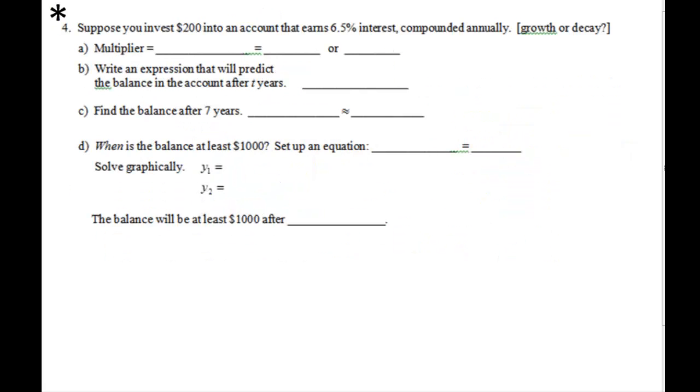Number four. Suppose you invest $200 into an account that earns 6.5% interest compounded annually. Growth or decay? Well, if I'm investing money and it's earning percentage interest, hopefully after each year I should have a larger amount. So the multiplier, we're taking 100% and we're adding the 6.5%, which is going to give us 106.5%. Be careful, move the decimal place. We're going to get 1.065. So this is growth. So writing an expression that will predict the balance in the account after T years. Well, what do we start with? We started with $200. What's the multiplier? Multiplier is 1.065 raised to the T.